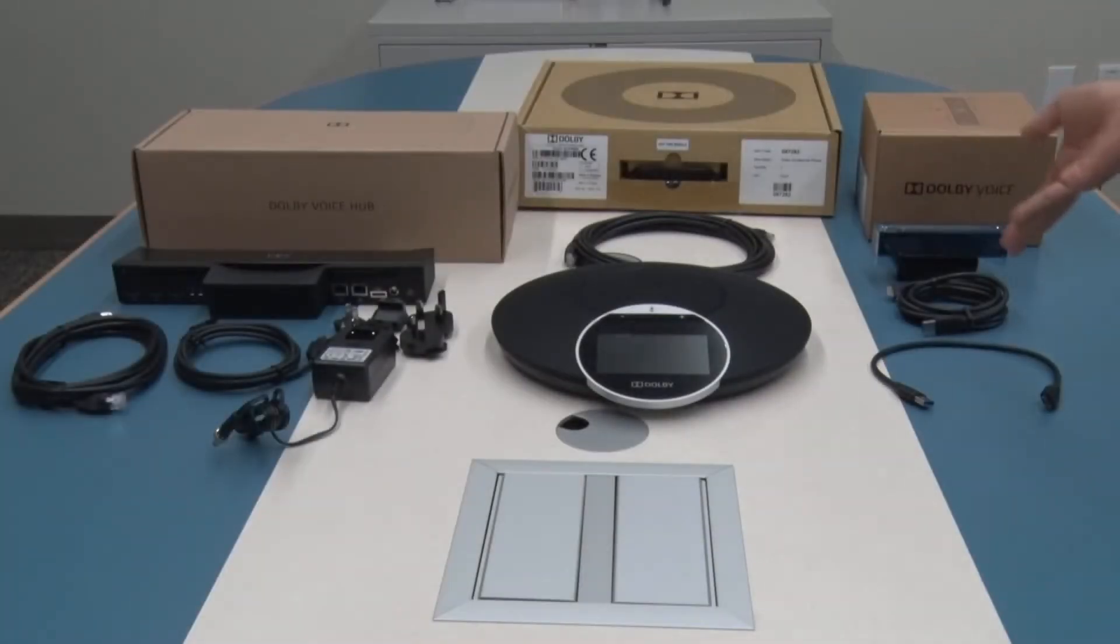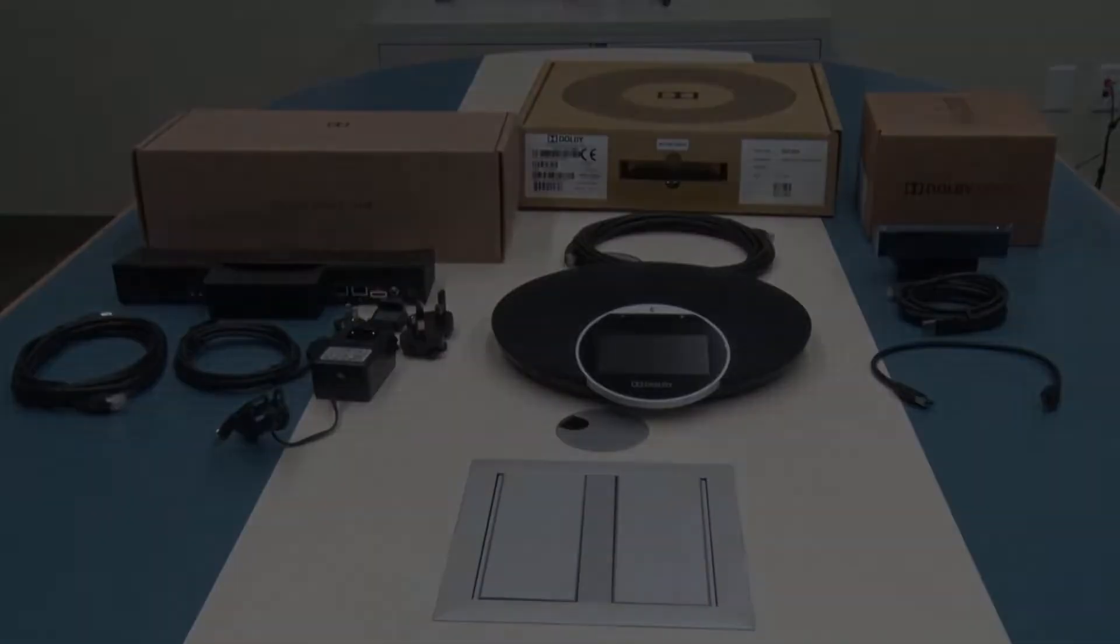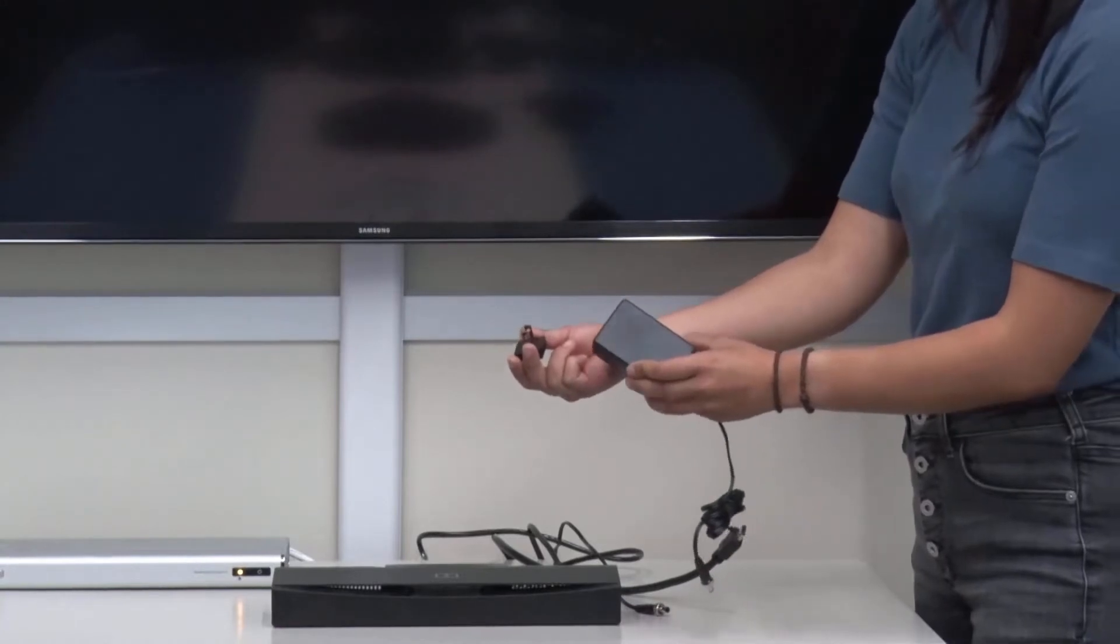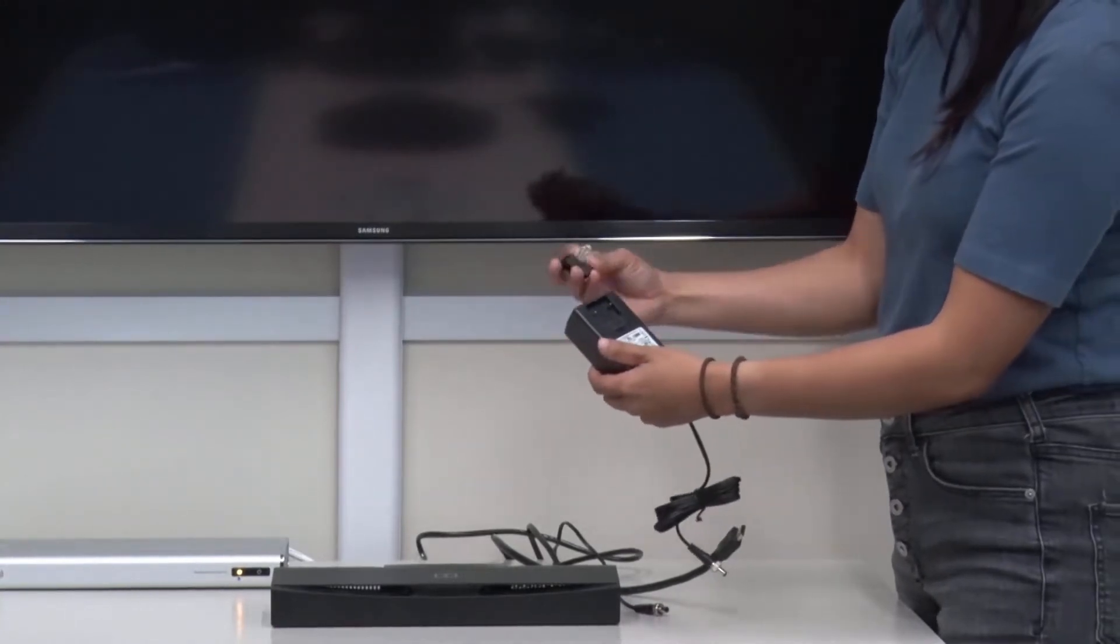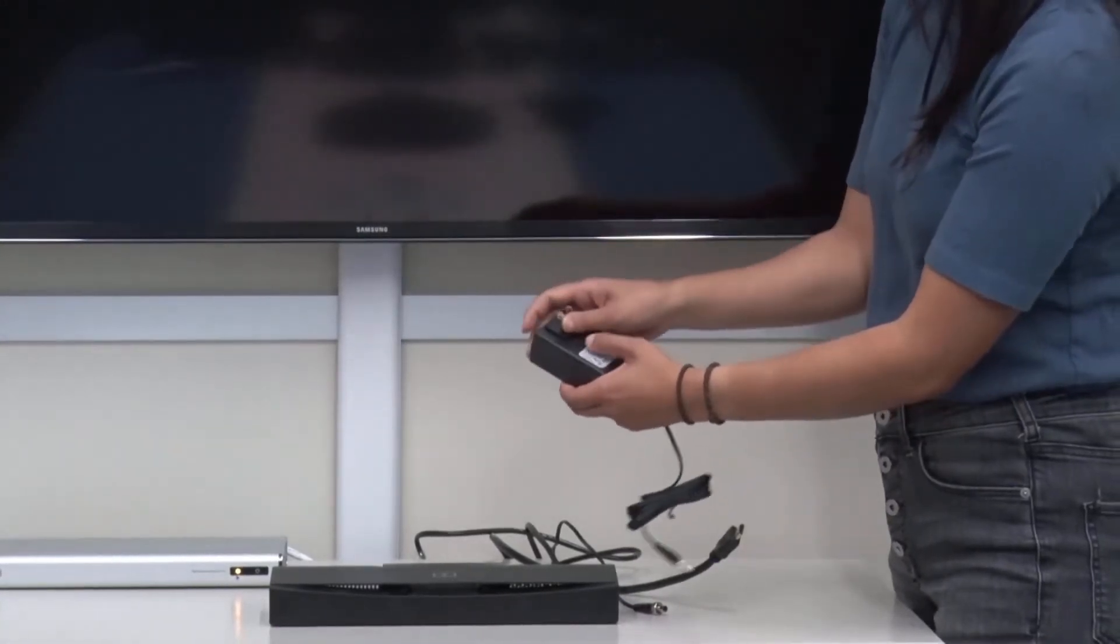Now that we have unboxed all the hardware that comes for the GoToRoom Dolby setup, we're going to start plugging it in starting with the hub. The first thing we have to do is connect the correct power connector to the power supply for your region.